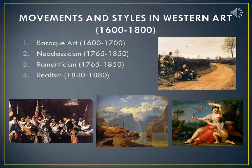The artistic periods that I chose to present in this project are all from Western art from 1600 to 1800. The first one is Baroque art from 1600 to 1700. The second one is Neoclassicism from 1765 to 1850. The third one is Romanticism from 1765 to 1850. And the last one is Realism from 1840 to 1880. I chose these four artistic movements because they represent some of the most important periods of time in the history of art. Although each period follows the previous one quite continuously, they each have specific characteristics that define each movement from the others. Although each movement uses the same medium, each period conveys different themes using different techniques.